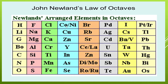However, there were certain limitations in Newland's law of octaves. In his table, there are instances of two elements fitted into the same slot — cobalt and nickel have been placed in the same slot, selenium and lanthanum in the same slot, and similarly barium and vanadium, and platinum and iridium. Because of this, it was considered a failure. Newland's periodic table was also restricted only to 56 elements.